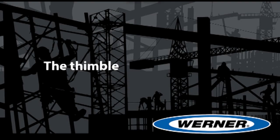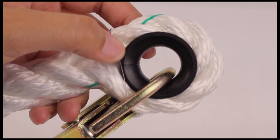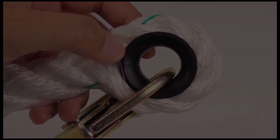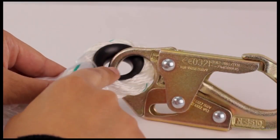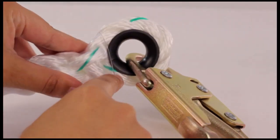The Thimble. The splice holds the thimble. Cracked or distorted thimbles may indicate the lifeline has been impact loaded.